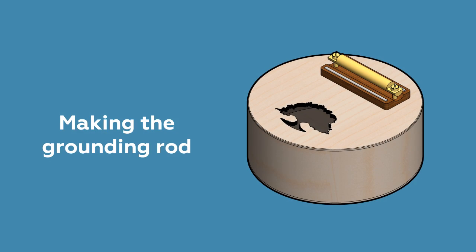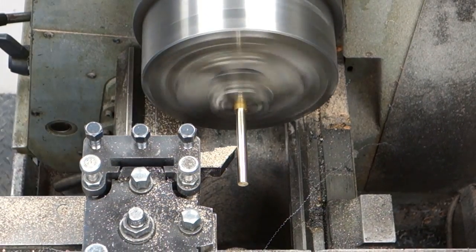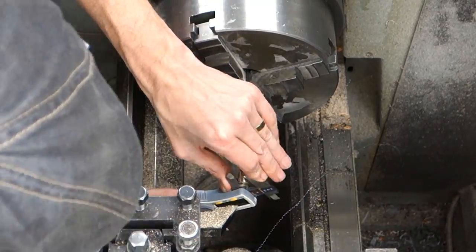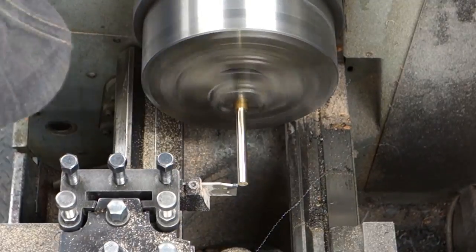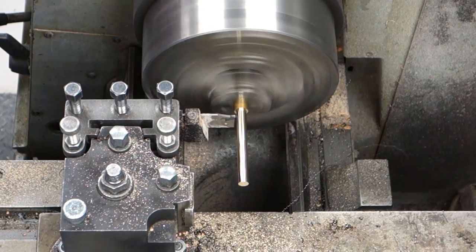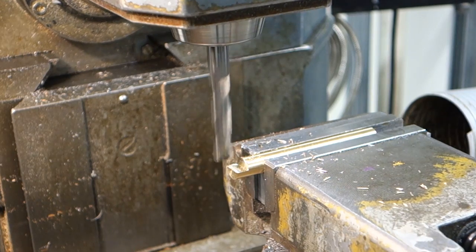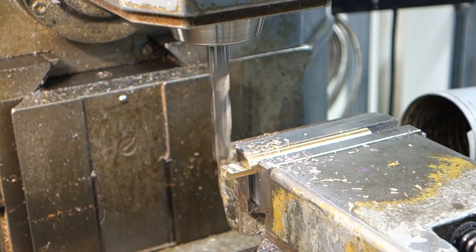Next we're going to make a rod which will both keep pressure on the tines, allowing them to be tuned and played, as well as holding the grounding bar snug against the body of the kalimba. The rod is simply turned down from brass stock on a lathe, intentionally going very slow because of the large overhang. The ends are then milled down and drilled with holes, matching the holes in the grounding bar and the body of the kalimba.